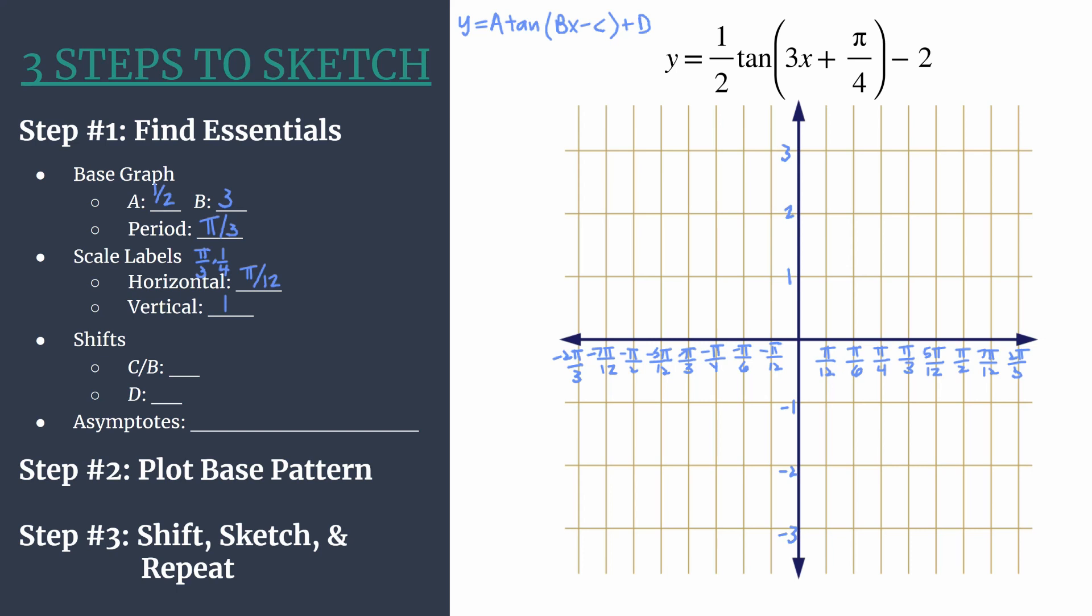Our shift for our horizontal shift is called a phase shift, and we have to be really careful calculating this. We take c and divide by b. Before we do that, notice that our equation, our general form equation has bx minus c. So for a plus to appear in our particular equation, we must have it as 3x minus negative π/4. So our c is actually negative π/4. Our horizontal or phase shift is going to be to the left.